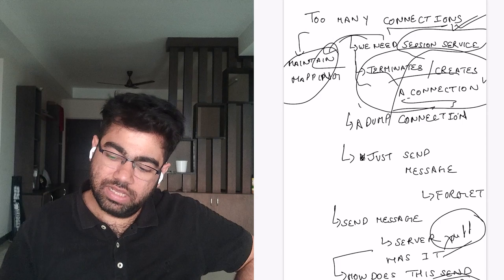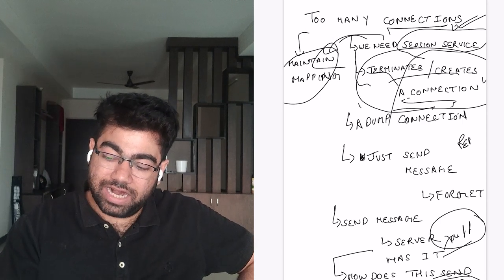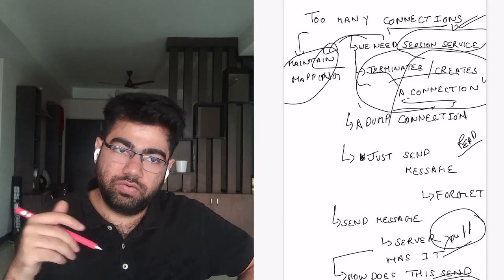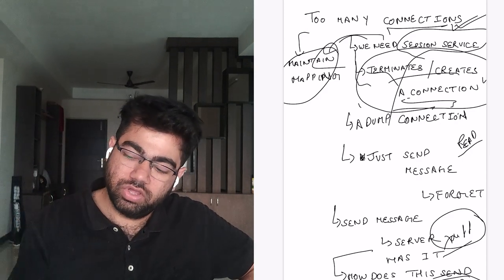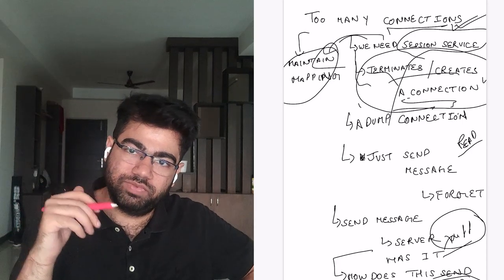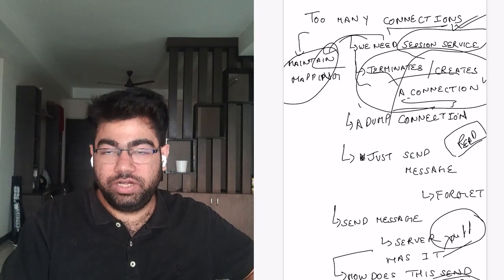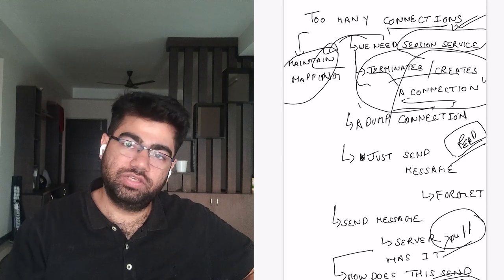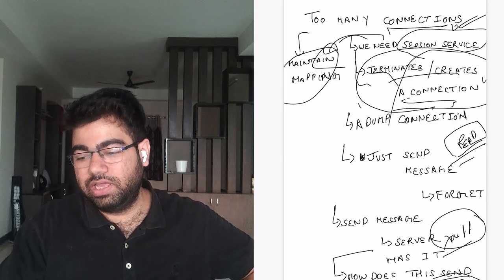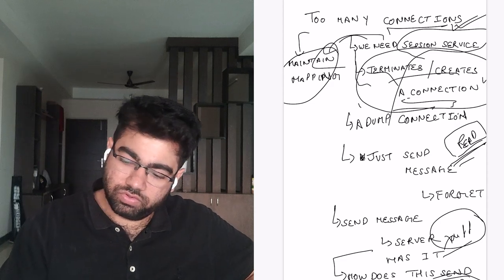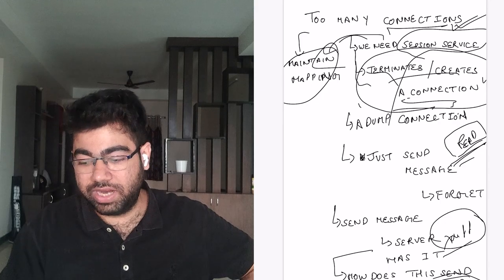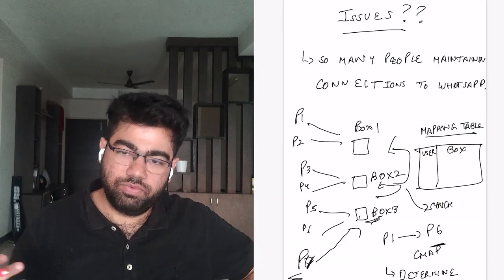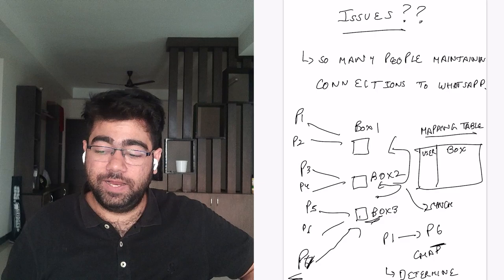That's how a basic chat application works. There are many features we haven't discussed — for example, read receipts are a big consideration, especially in groups. Suppose there are 200 group members and billions of messages: how do you store how many people have read each message? That's a great problem to research. To limit the scope of this video, I'll stop here. I hope you got a basic idea of how a chat application functions — let me know your questions in the comments below.